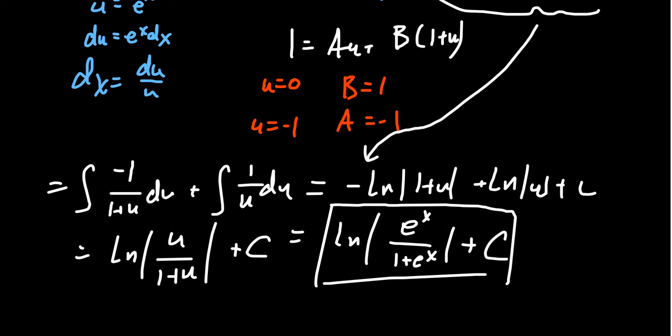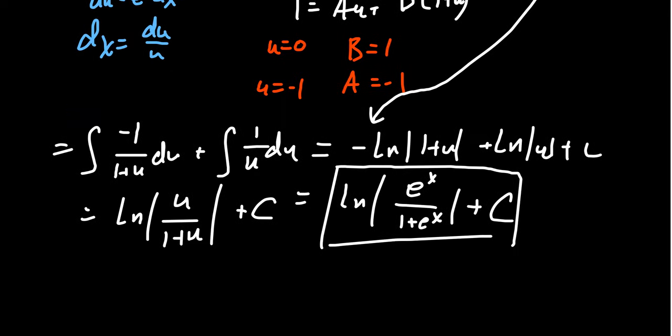I also want to mention that since we're taking the natural log of e to the x, had you not combined the logs together, if you had kept it looking something like this, you're going to get the natural log of e to the x. So that would give you an x minus the natural log of the absolute value of 1 plus e to the x. 1 plus e to the x is always positive. So if you forgot the absolute value, you should still be correct.